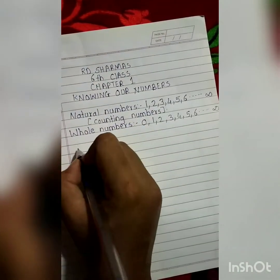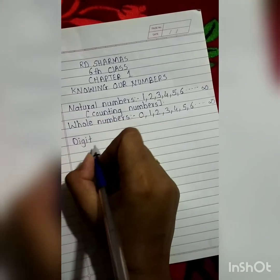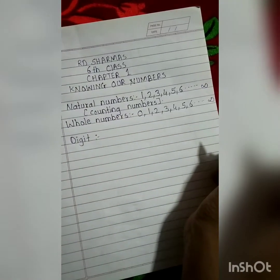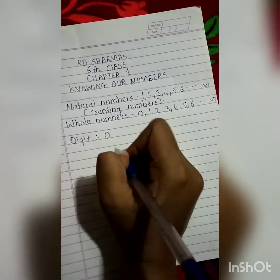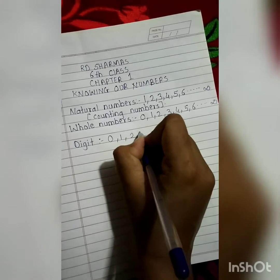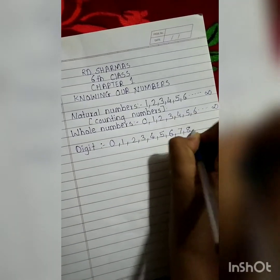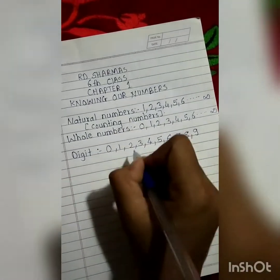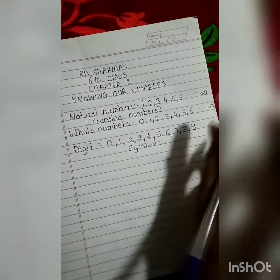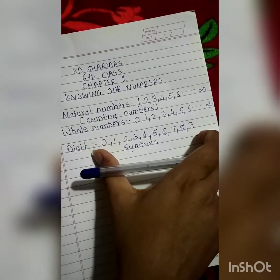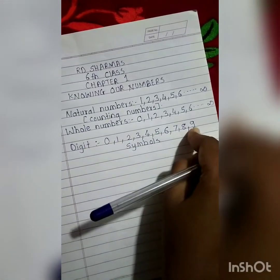Next is digit, or you can call it a figure. A digit is nothing but the symbols which you use to show a particular number. So if you are supposed to show 0, you draw this symbol. Likewise 1, 2, 3, 4, 5, 6, 7, 8, 9 — these are the symbols by which we show numbers. There are a total of 10 symbols, or you can say there are 10 digits. Wherever you see, you will find these 10 digits whenever you are showing numbers.